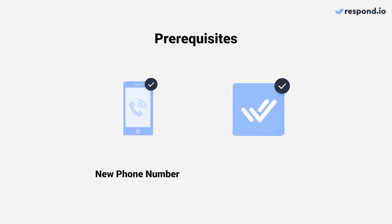You'll need two things to start. One, you'll need a new phone number that is not connected to a personal WhatsApp or WhatsApp Business App account. Two, you'll need a Respond.io account. Click on the link in the description to sign up for a free trial.